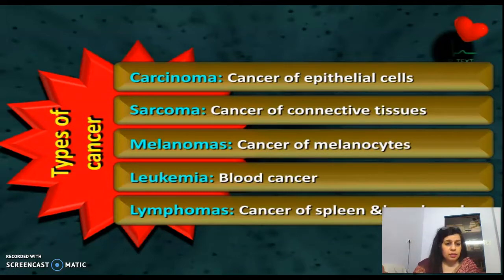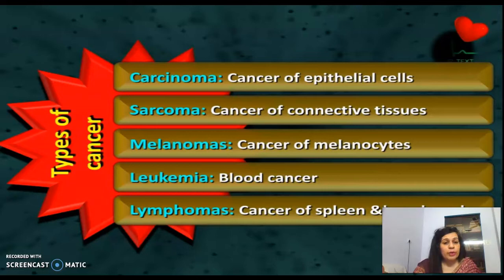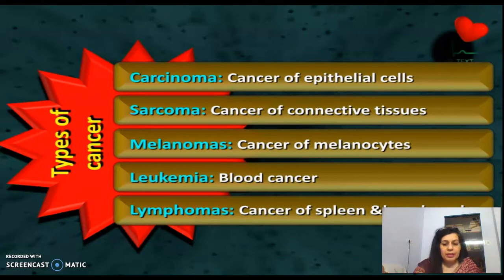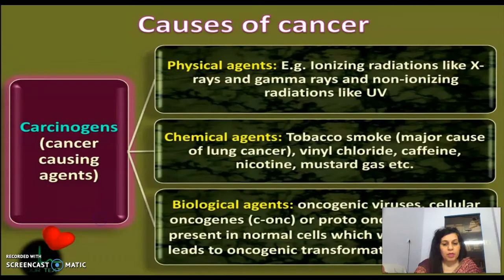Cancer is classified based on its origin. Cancer of epithelial tissue is called carcinoma. Cancer of connective tissue is called sarcoma. Cancer involving melanin pigment is called melanoma. Cancer of the blood is called leukemia, and cancer of the spleen or lymph nodes is called lymphoma.